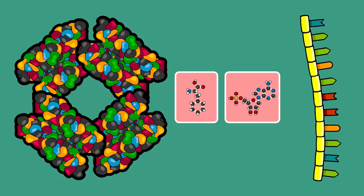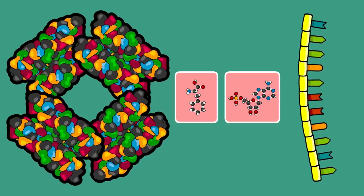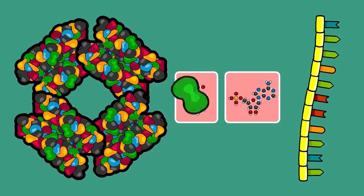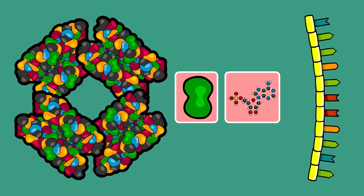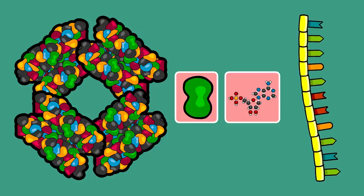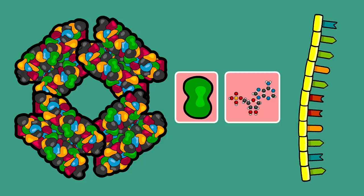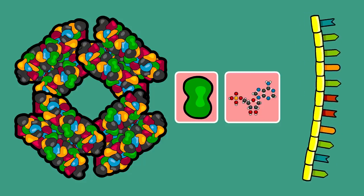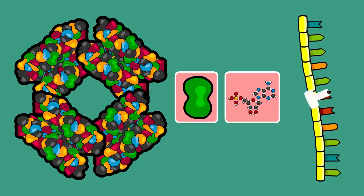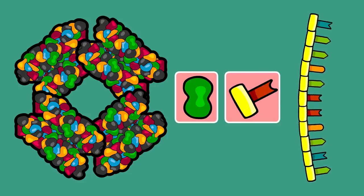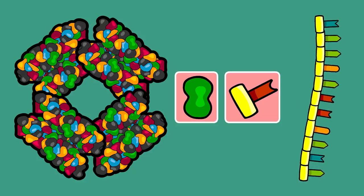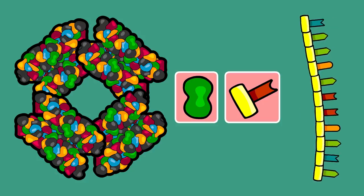On the left is a protein — each colored shape represents a single amino acid. On the right is a cartoon chain of RNA; each colored link represents a single nucleotide.